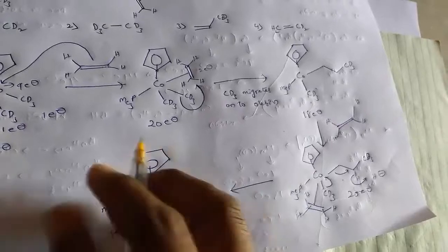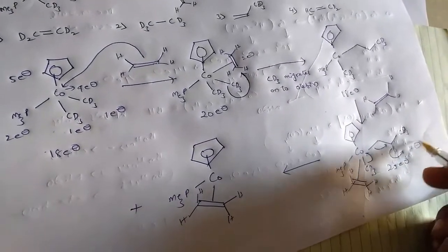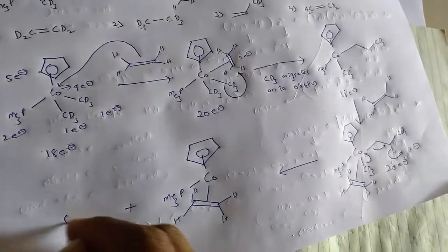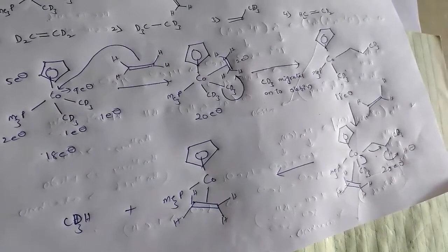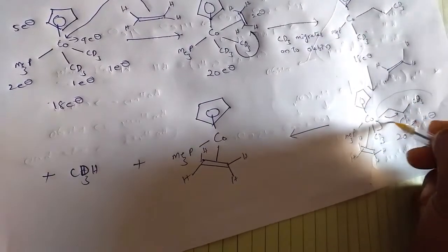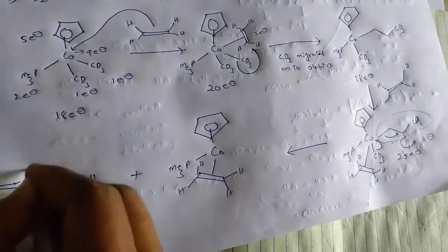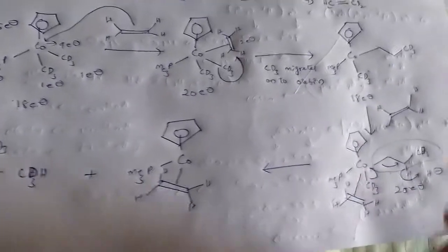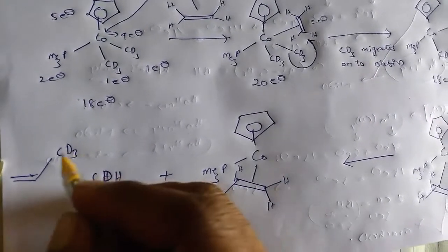These are the products. We get, here CD3 plus this H minus forms CD3H. And another leaving group is this one. That means, simply, alkynic product CD3. From this, we get CD3. This is A here.